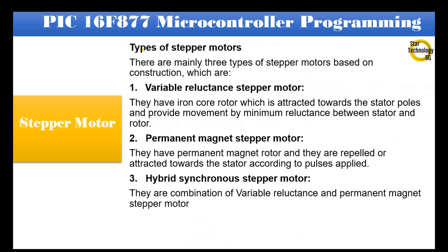Types of stepper motors. There are mainly three types of stepper motors based on construction. First, variable reluctance stepper motor: they have an iron core rotor which is attracted towards the stator poles and provide movement by minimum reluctance between stator and rotor.